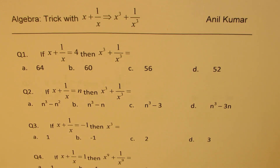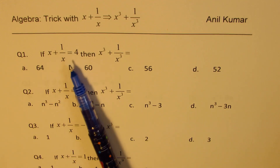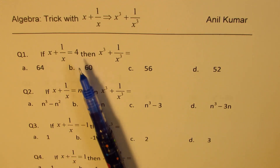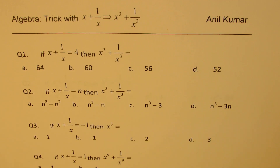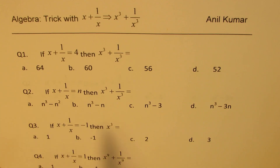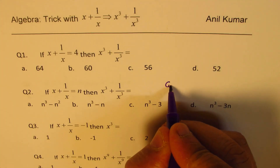Question number one: if x plus 1 over x is 4, then x cube plus 1 over x cube is what? Four choices are given. Question number two: if x plus 1 over x is n, then x cube plus 1 over x cube is what? As you can see, question number two will give you a general formula.